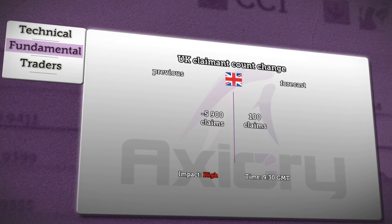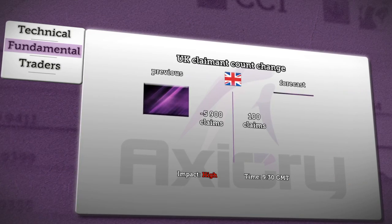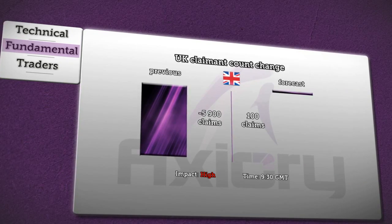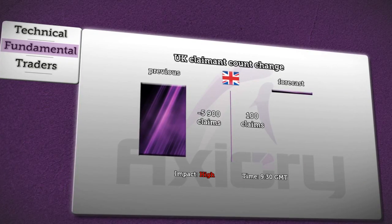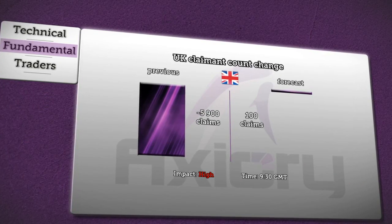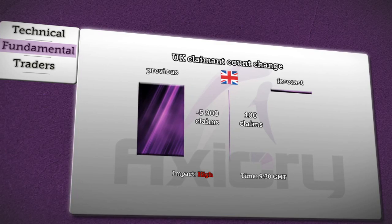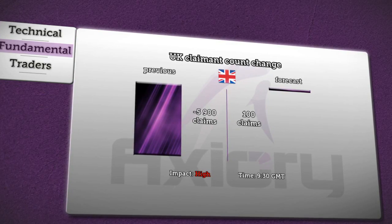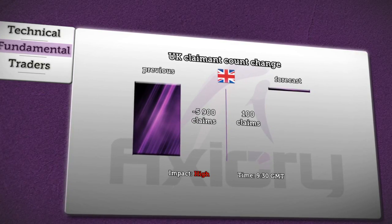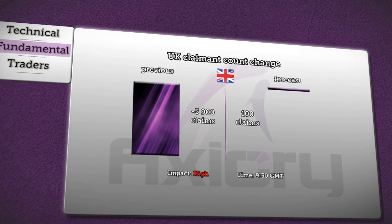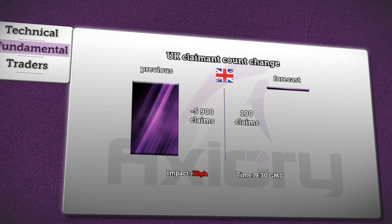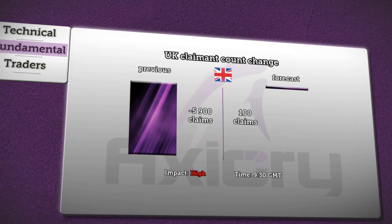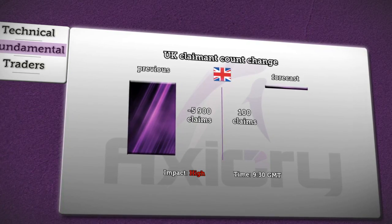Today, we start with figures about claimant count change in the UK, which will be released at 9:30 a.m. GMT. Analysts are expecting an increase of 100 in jobless claims, compared to the previous decrease of 5.9 in claims. This will also have a high impact on the dollar.